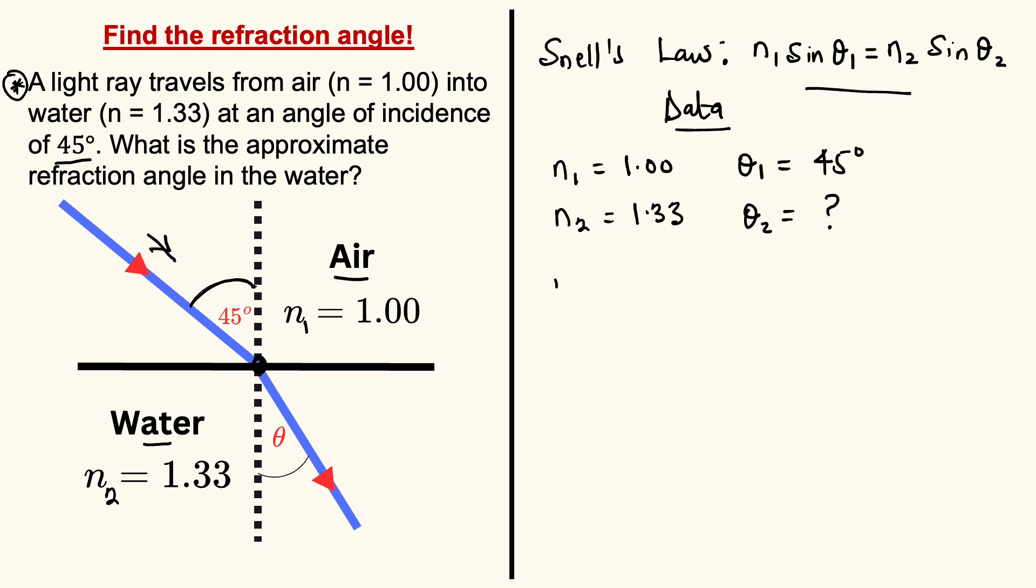N1 sine of theta1 equals N2 sine of theta2. Let's plug in our values. We have 1.00 sine 45 equals 1.33 sine theta2. We are looking for theta2. We have to isolate sine of theta2 so we can find the sine inverse to get theta2. To isolate that, we divide both sides by 1.33.